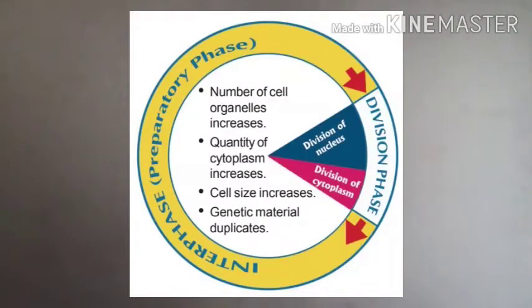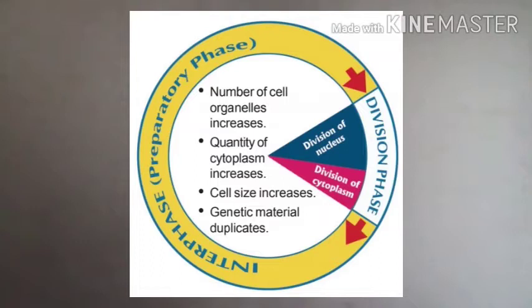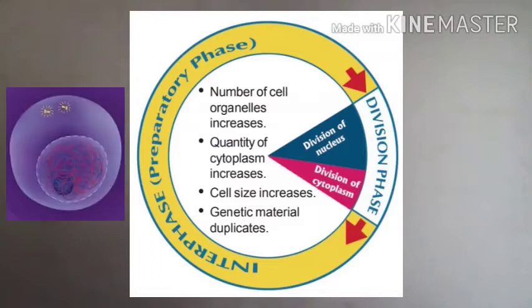Let us examine the stages of the cell cycle. The cell cycle is divided into two phases: interphase, a period of preparation for cell division, and division phase, the actual period of cell division. A cell attains its complete growth during interphase. During this phase, some changes take place inside the cell: the number of cell organelles increases, the quantity of cytoplasm increases, cell size increases, and very importantly, the genetic material duplicates.